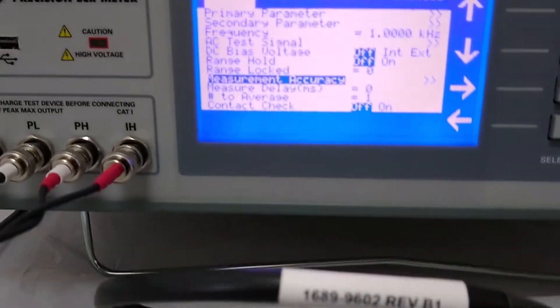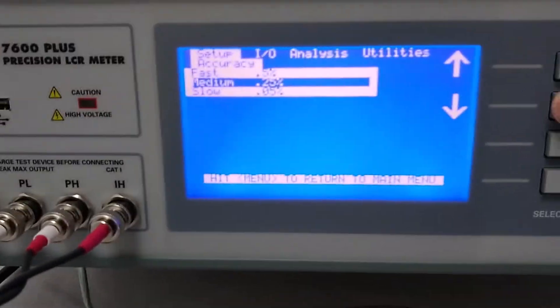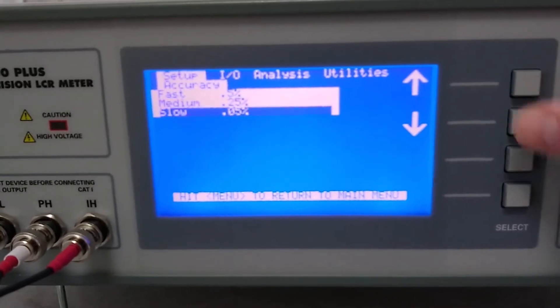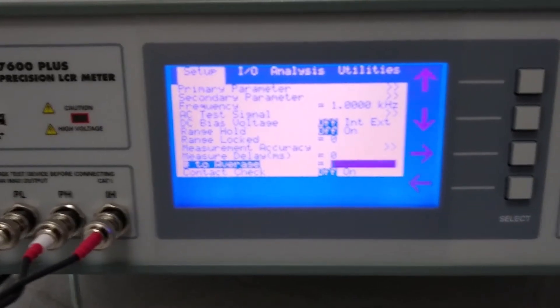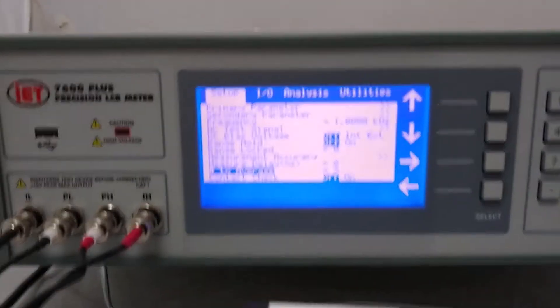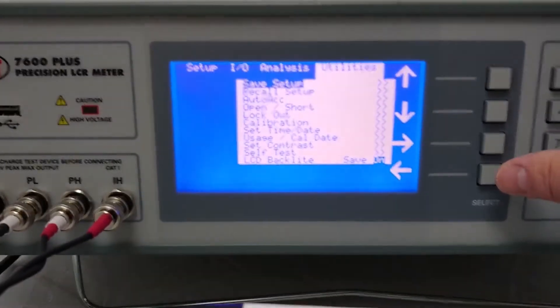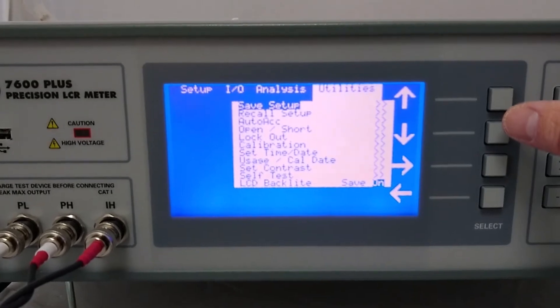We should go down to measurement accuracy. Again, press enter. Use the arrow keys to go down to slow. And we can also add an average. So let's enter an average of 3. If we'd like at this point, we could actually go over to utilities and go to save setup and save setup as default.